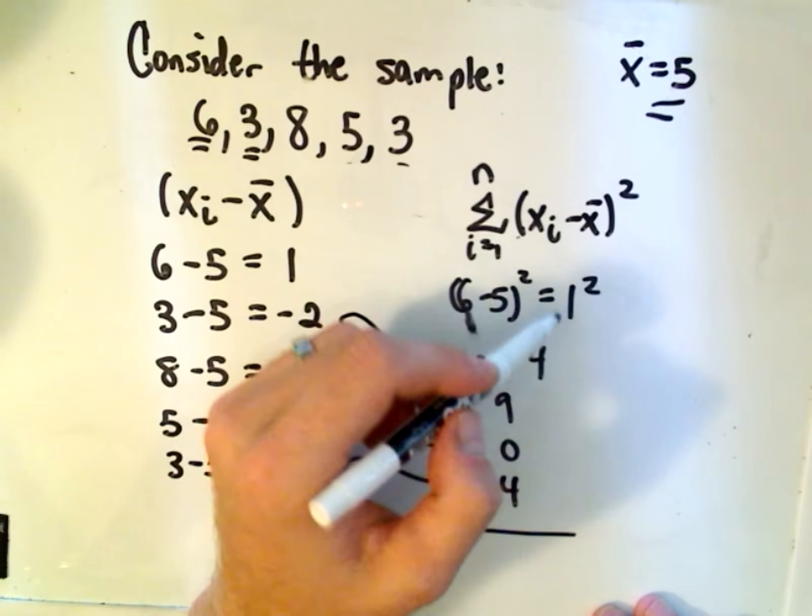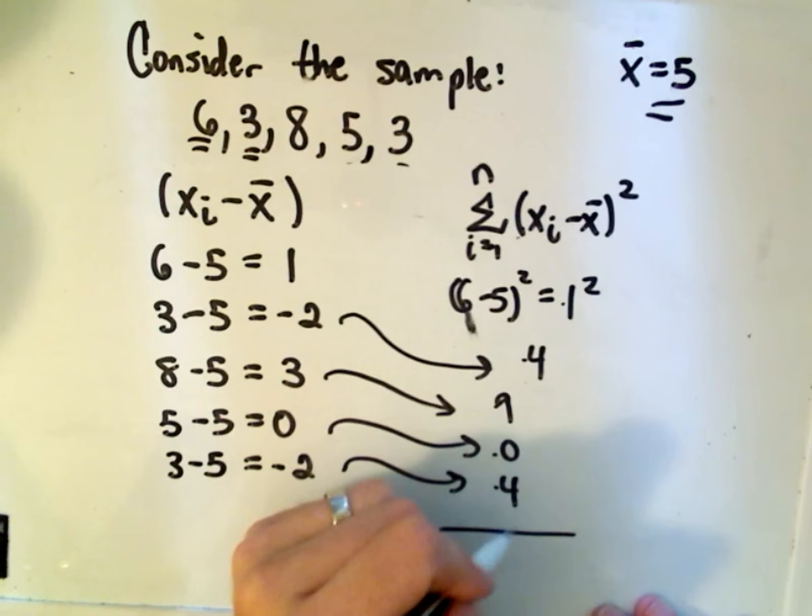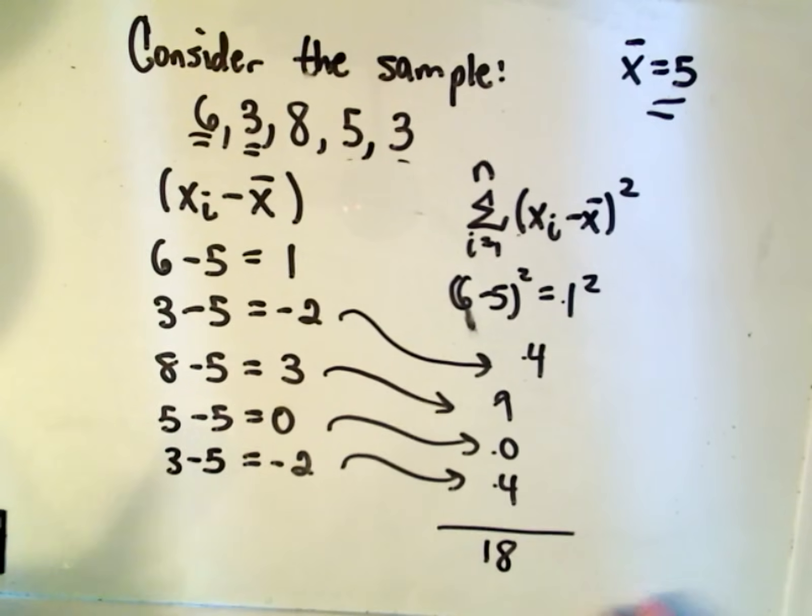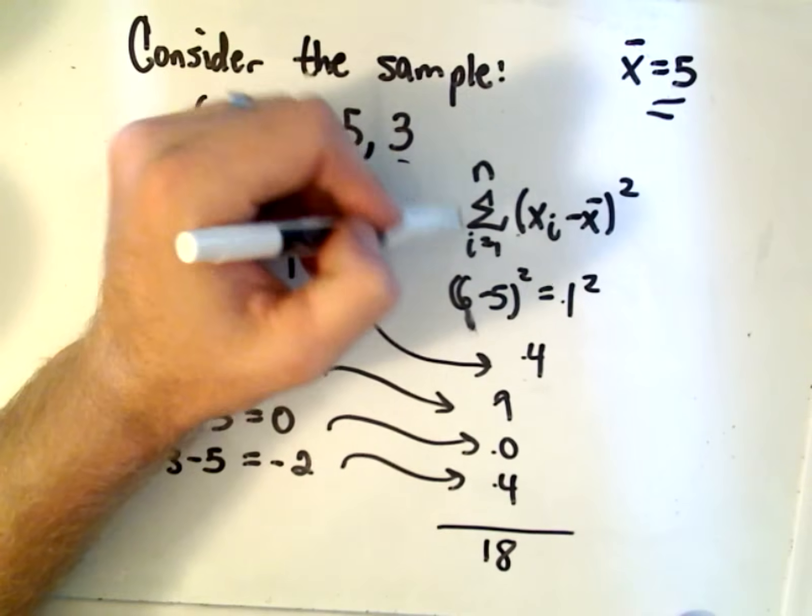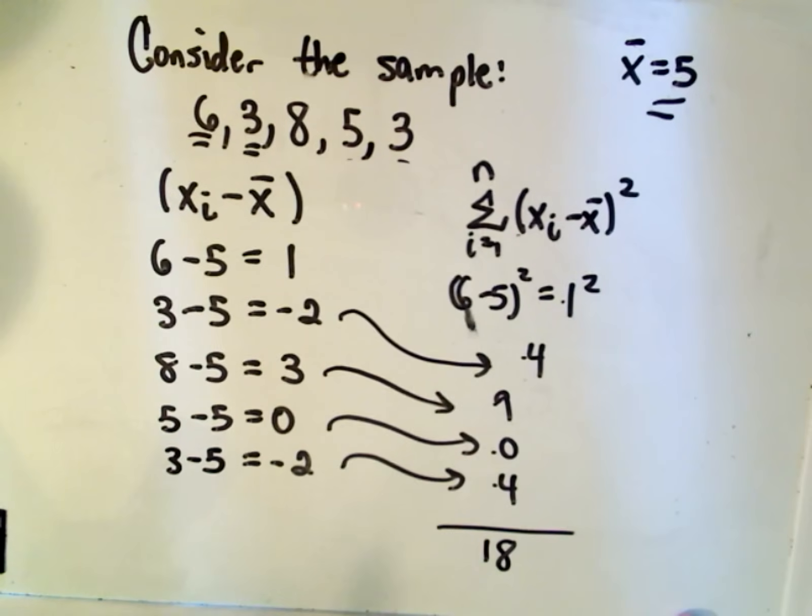So if I add these numbers up, 1 plus 4 plus 9 plus 0 plus 4, I got this to be 18. So again, that's what the sigma means. It means to add all the values up. So we've done that part now.